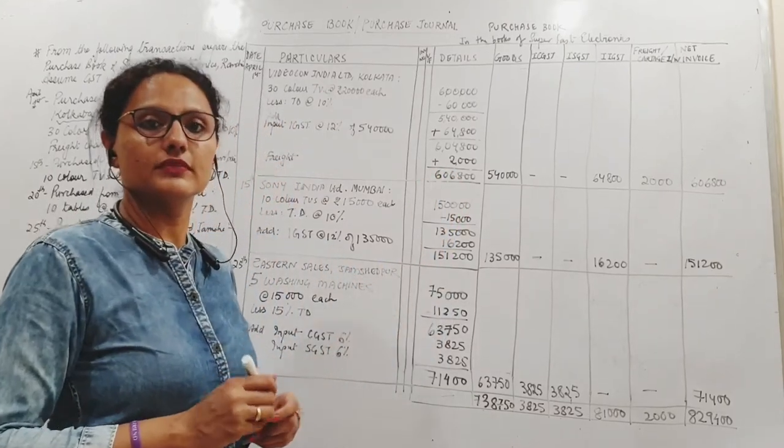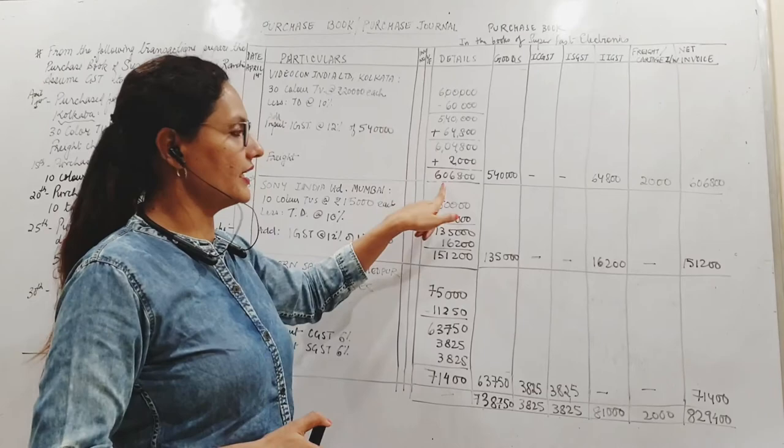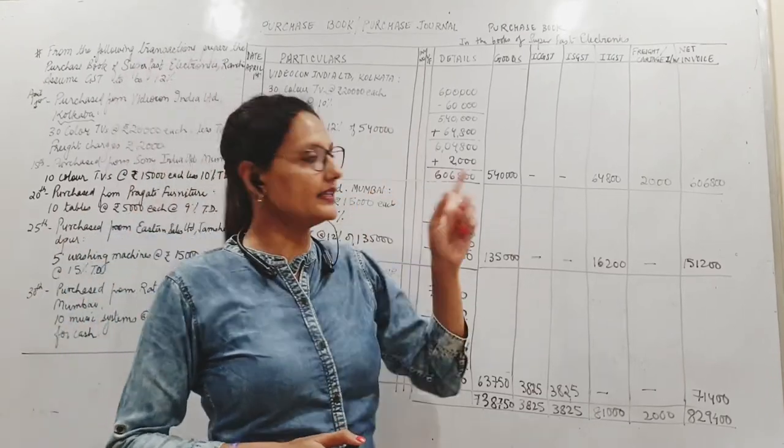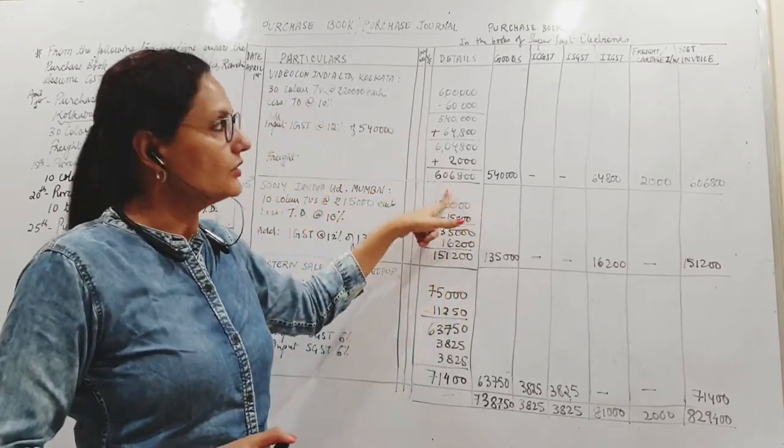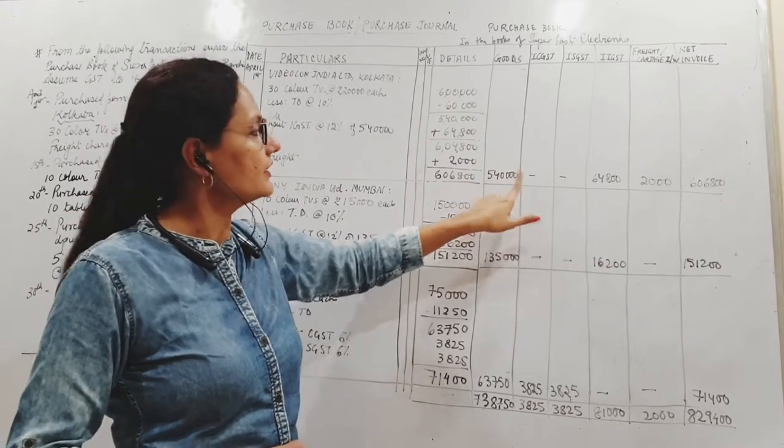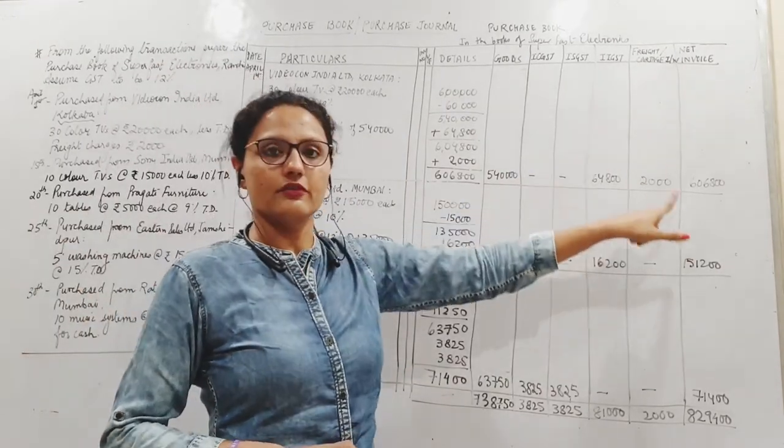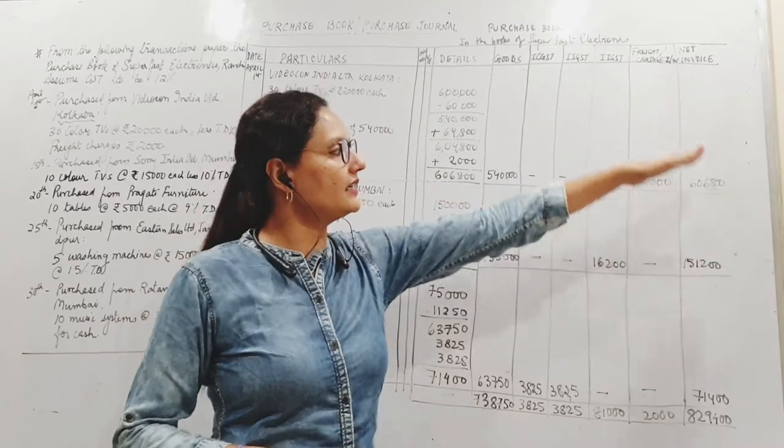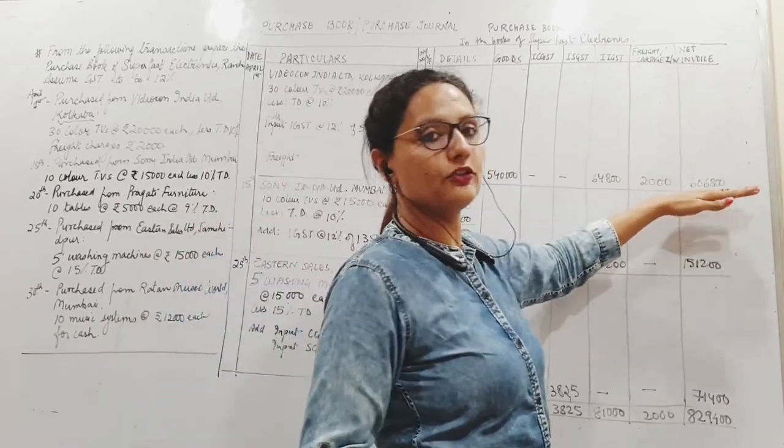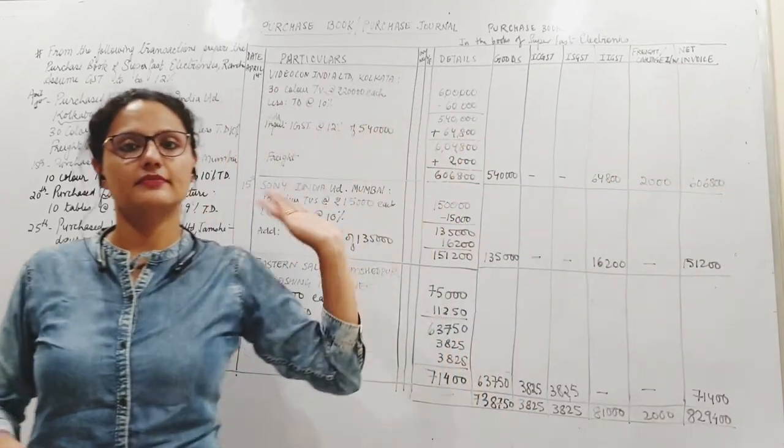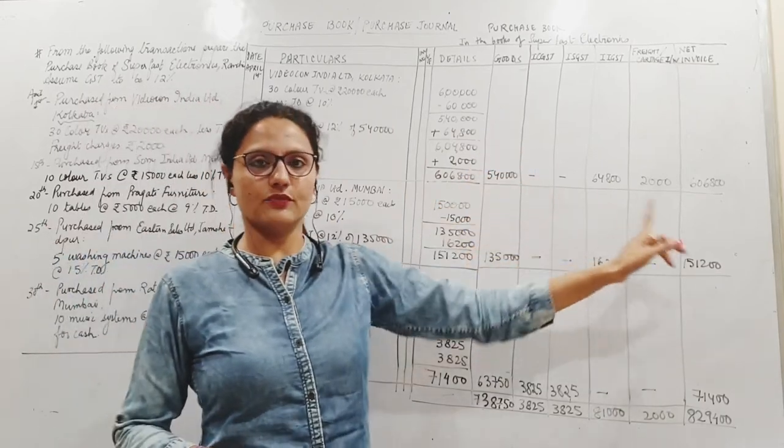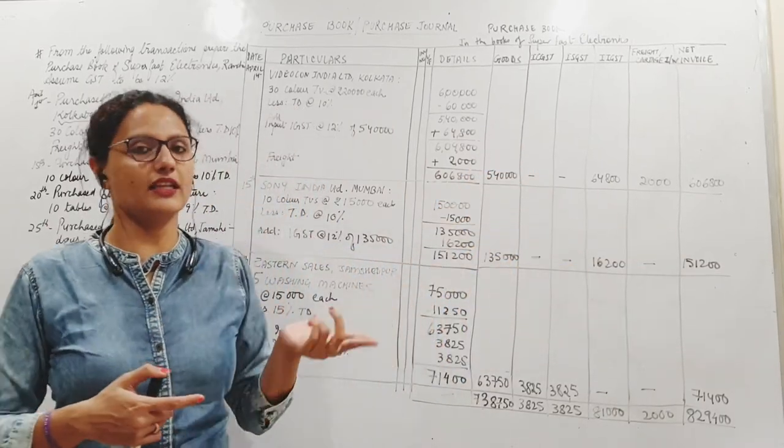Now this entire thing is my working. Now I will show this total - cost of goods, my tax, freight as my expenses, and then total how much do I have to pay to my creditors. This will help me post the entries into the ledger later, so this will simplify my work.